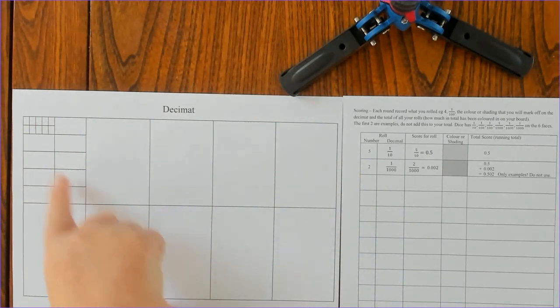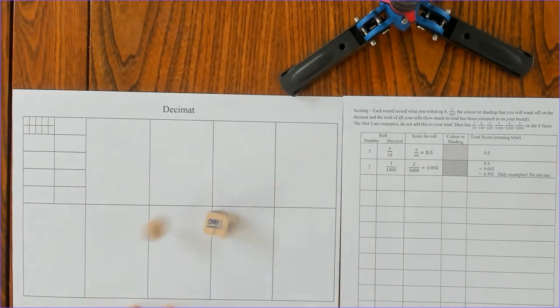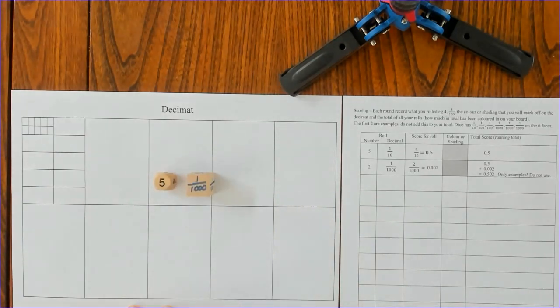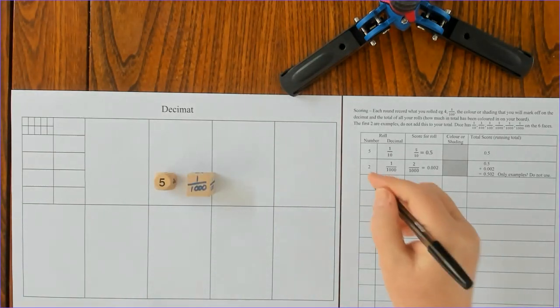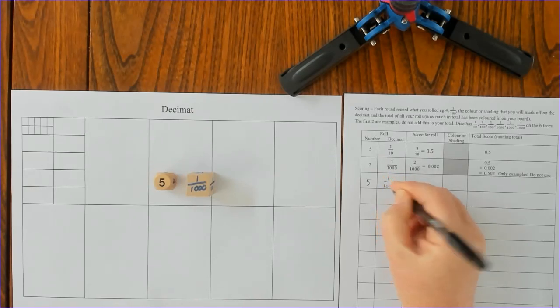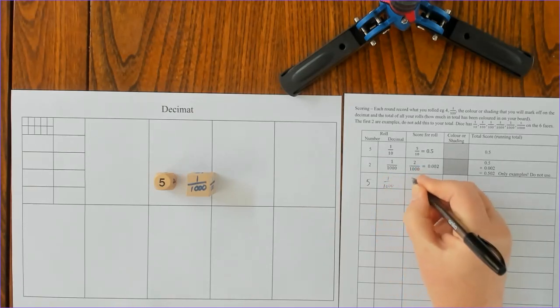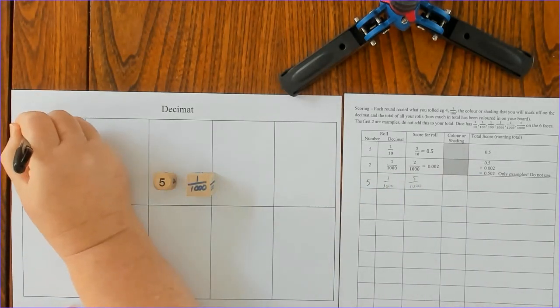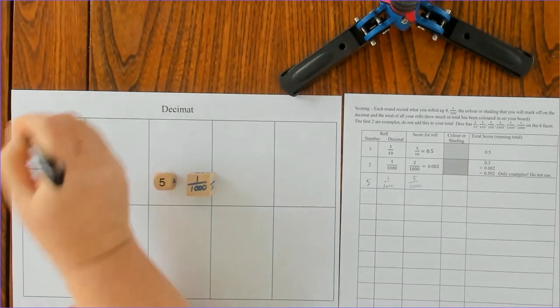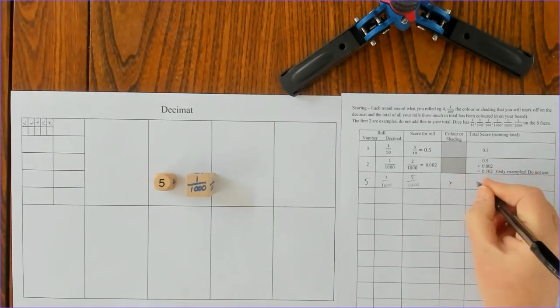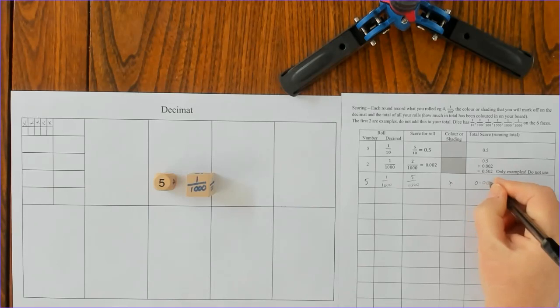Let's start off. Five one thousandths is my first roll, so I'm going to put my number, five. My decimal is thousandths, so I've got five thousandths to color in. One, two, three, four, five, and put a cross in there. My score is five thousandths.